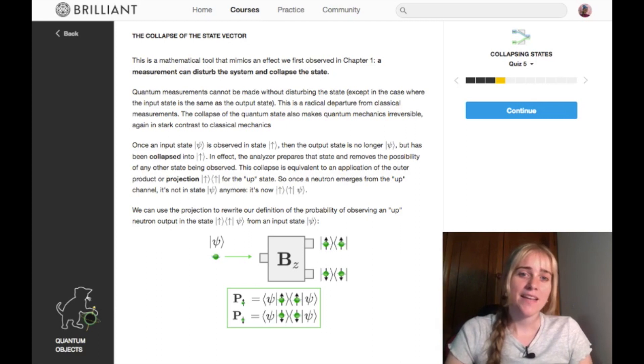For a very quick summary of what I covered last time, I'm on this page here. We learned that a measurement can disturb the system and collapse the state. That is one of those fundamental things about quantum mechanics - that making a measurement will change what you're working with. It collapses the state of the quantum particle. Once an input state like this has been observed to say spin up, the output state is no longer the wave function but has been collapsed into spin up. We spoke last time about these projections, so this here is an outer product where you have a ket and then a bra next to each other.